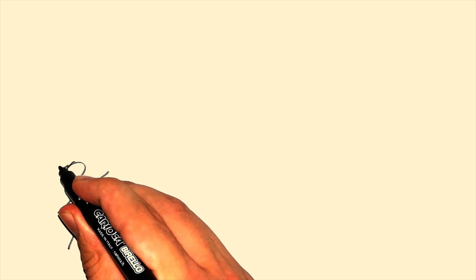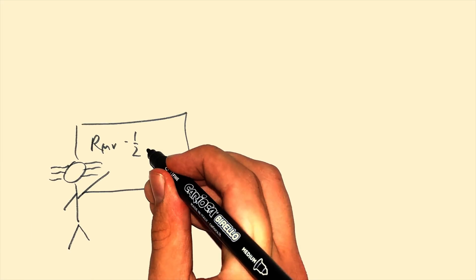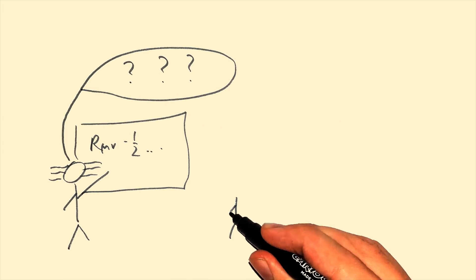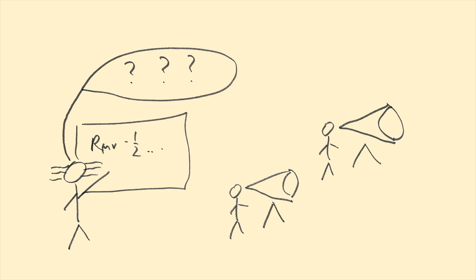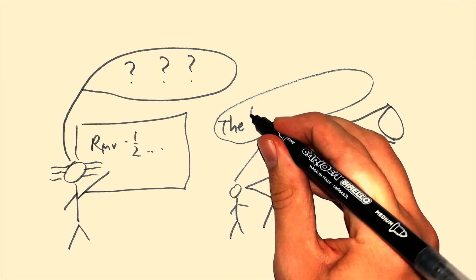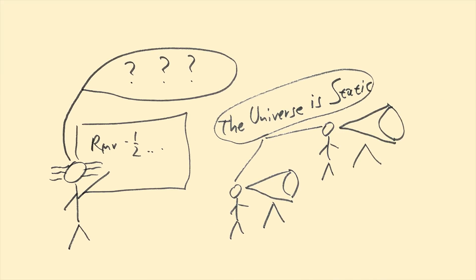While Einstein was developing General Relativity, he was asking astronomers at that time many questions. And something all astronomers agreed on was that the universe was static and unchanging. There was no start to the universe, and there will be no ending.